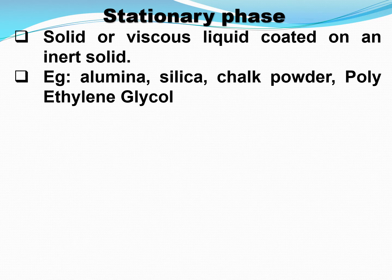Examples of stationary phase include alumina, silica, chalk powder, and polyethylene glycol. Alumina, silica, and chalk powder are solids, while polyethylene glycol is a viscous liquid. It can be coated on glass or some other polymeric material and used as the stationary phase.